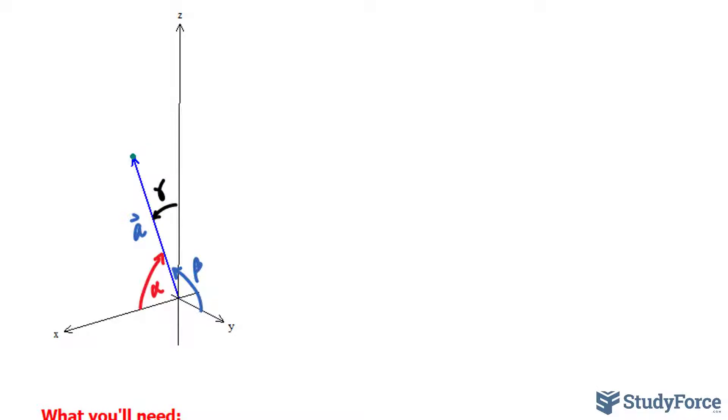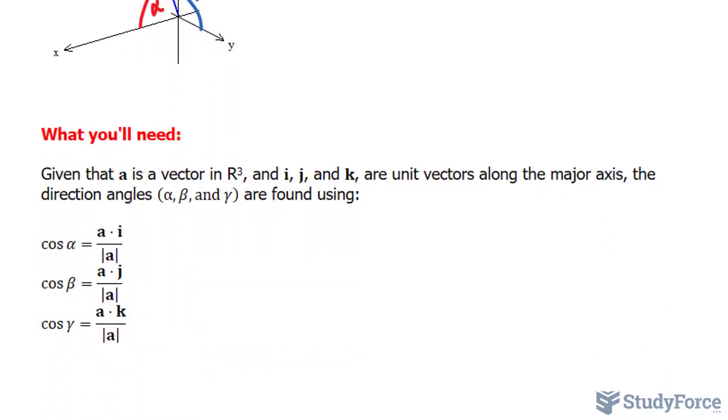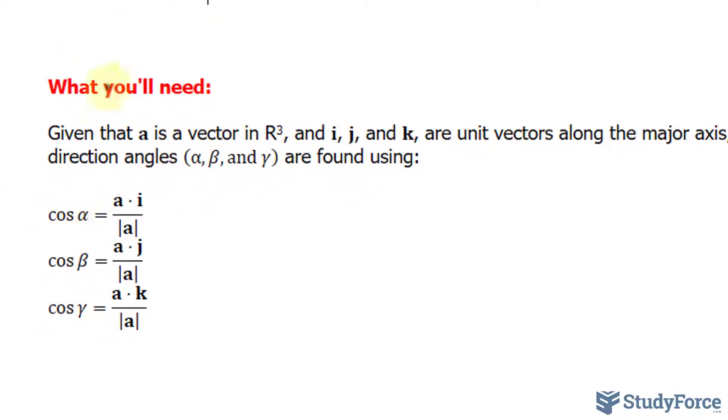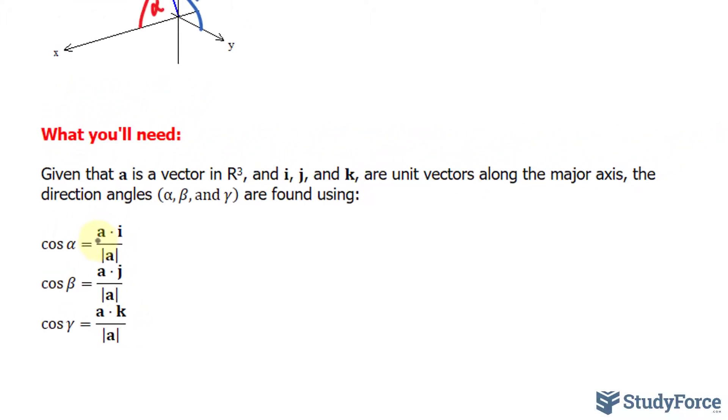Now, according to the formulas provided, to find alpha, beta, and gamma, we use the following formulas. Let's focus on this one: to find alpha, we take the dot product of a times i (a being the vector, and i being the unit vector along the x-axis). The components of i, for reference, are 1, 0, and 0.